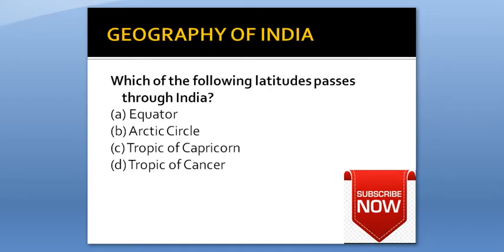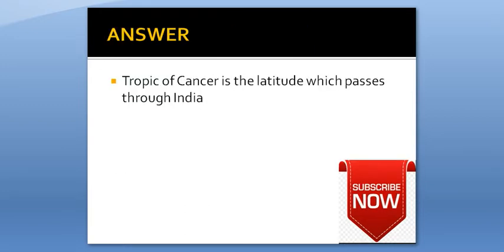Which one of the following latitudes passes through India? Option A: Equator. Option B: Arctic Circle. Option C: Tropic of Capricorn. Option D: Tropic of Cancer. Answer is Tropic of Cancer is the latitude which passes through India.